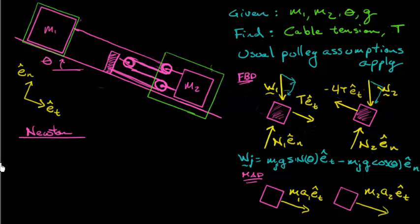Now I think I'm ready to start deriving some equations of motion using Newton's second law. For block number one in the e hat t direction, I've got a component of the weight, m1g sine theta, plus the tension in the cable equals m1a1.